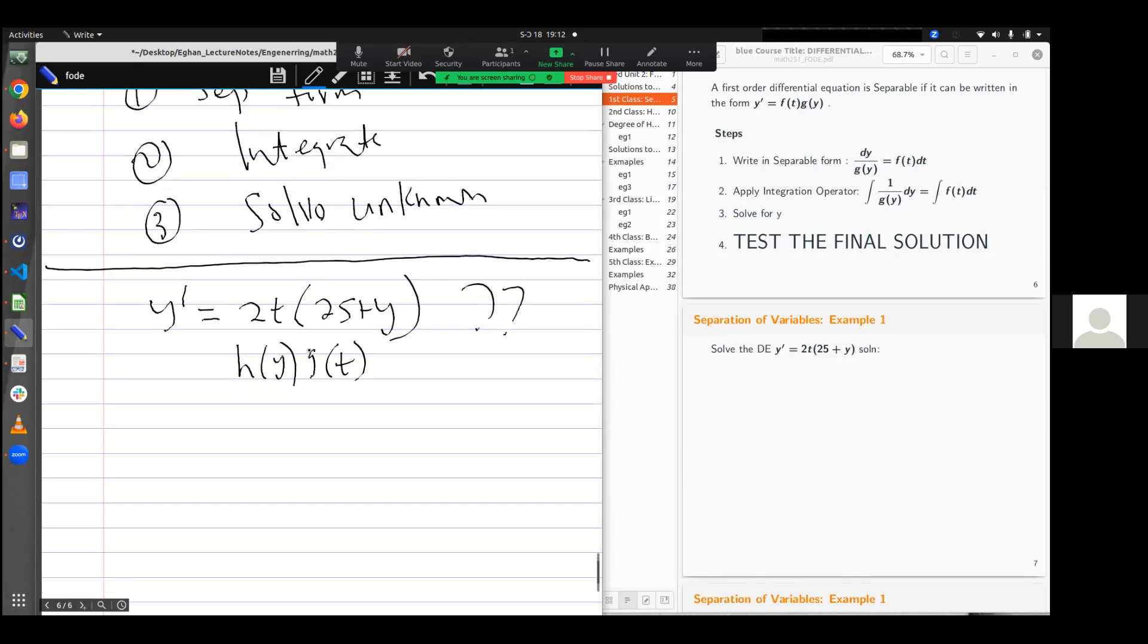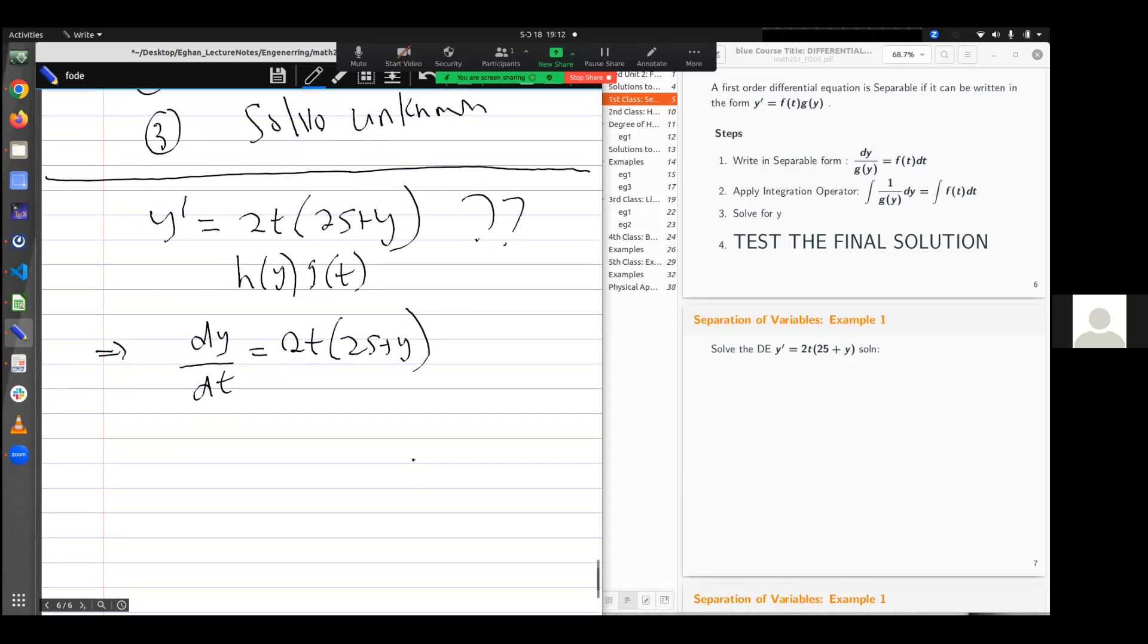I can do this by first writing it in the standard form. We've gone through the standard form in the first video. So I have dy/dt is equal to 2t(25 + y). If I do a cross multiplication, I'm looking at the differential form.